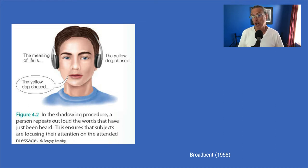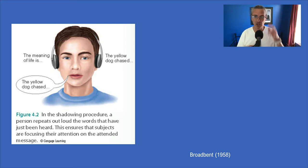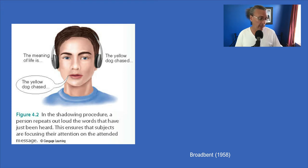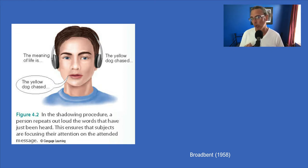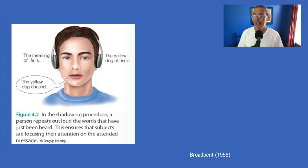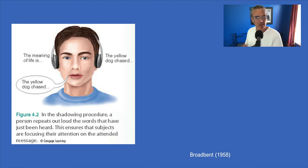Shadowing forces the participant into the cocktail party situation — multiple messages going on, but we say pay attention to this one ear and block out the other. At first people find it a little challenging, but they get going quickly and easily. What it feels like is that the message you're not attending to just seems to go away as your mind gets focused on the one you're attending to.